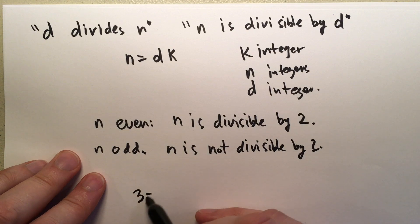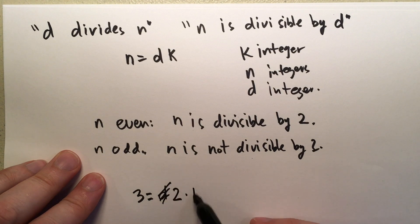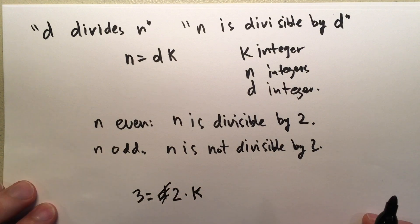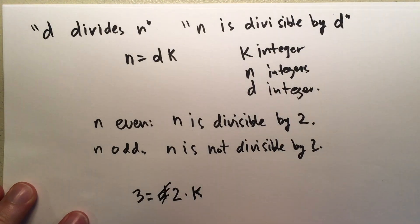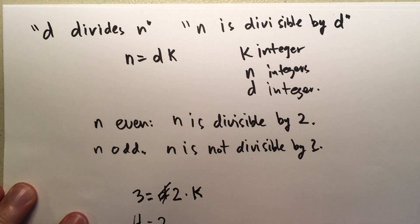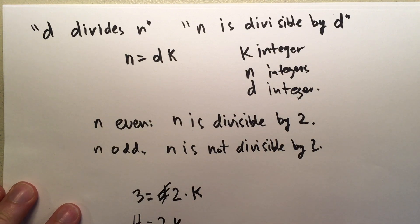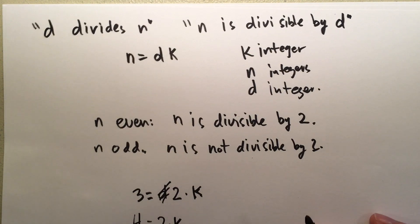So, for instance, for three, we can't say three is equal to two times some number K. There is no integer times two that will get you three or seven or nine or anything like that. So, three is odd. But four, for instance, there is integers that you can multiply two by to get four. In this case, two. So, that is the section.